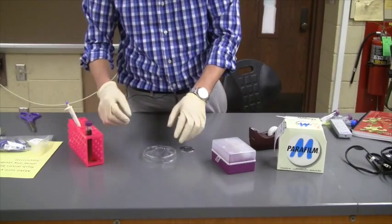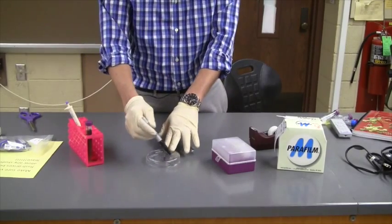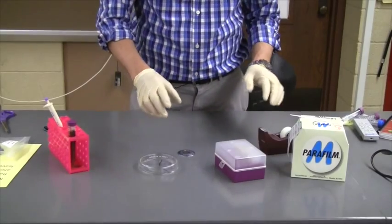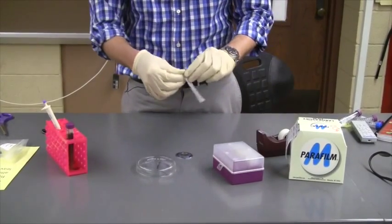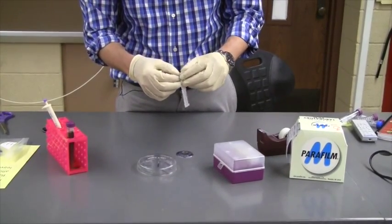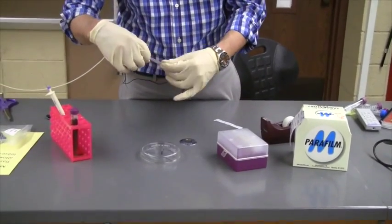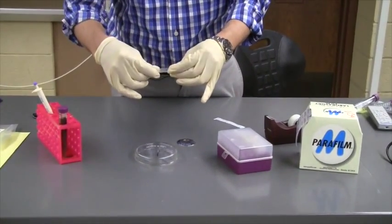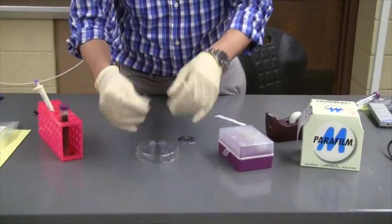To seal the plate once you do that, you may want to write your name and your group number on the lid. To seal the plate, you can then use parafilm. Parafilm, like I said, is sort of a stretchy wax-like paper or film, I guess.